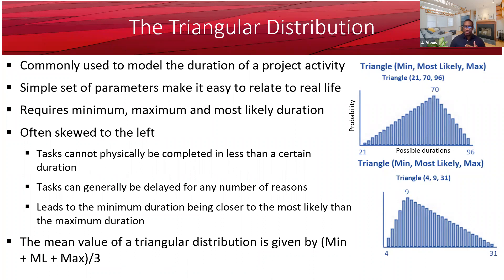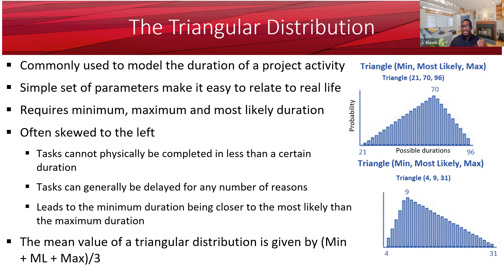You may ask: what is the difference between the triangular distribution and the beta-PERT distribution? We have three durations here — for example, 21, 70, and 96 days in one curve, and 4, 9, and 31 days in another. In this graph, probability is plotted on the vertical axis and possible durations on the horizontal axis.